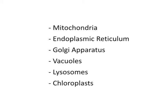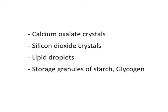Some eukaryotic cellular organelles are mitochondria, endoplasmic reticulum, Golgi apparatus, vacuoles, lysosomes, and chloroplasts. In addition to organelles, the cytoplasm of eukaryotic cells also contains tiny particles called cytoplasmic inclusions suspended in the cytosol. The cytoplasmic inclusions are of many types present in different cells and include calcium oxalate crystals, silicon dioxide crystals, lipid droplets, storage granules of starch, glycogen, etc. The eukaryotic subcellular organelles and cytoplasmic inclusions are discussed as follows.